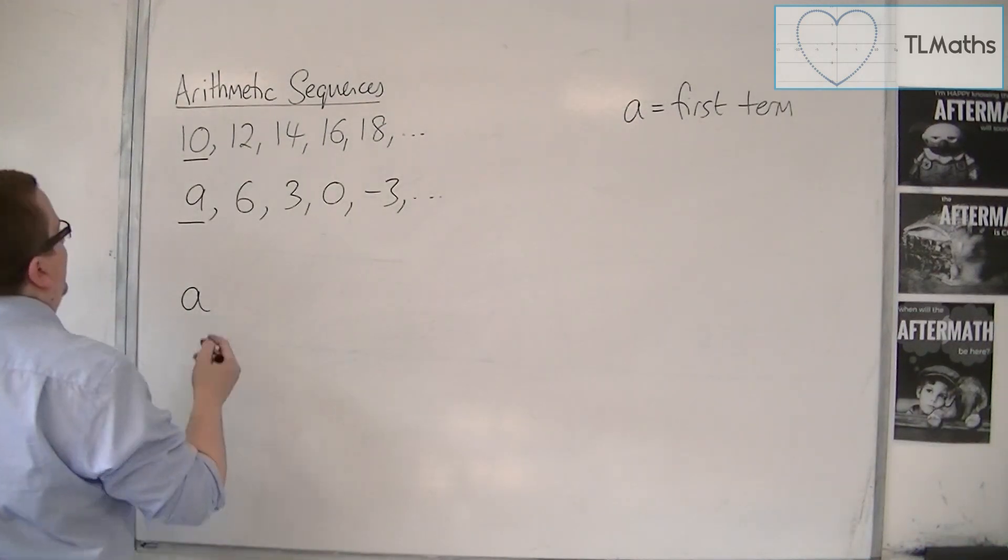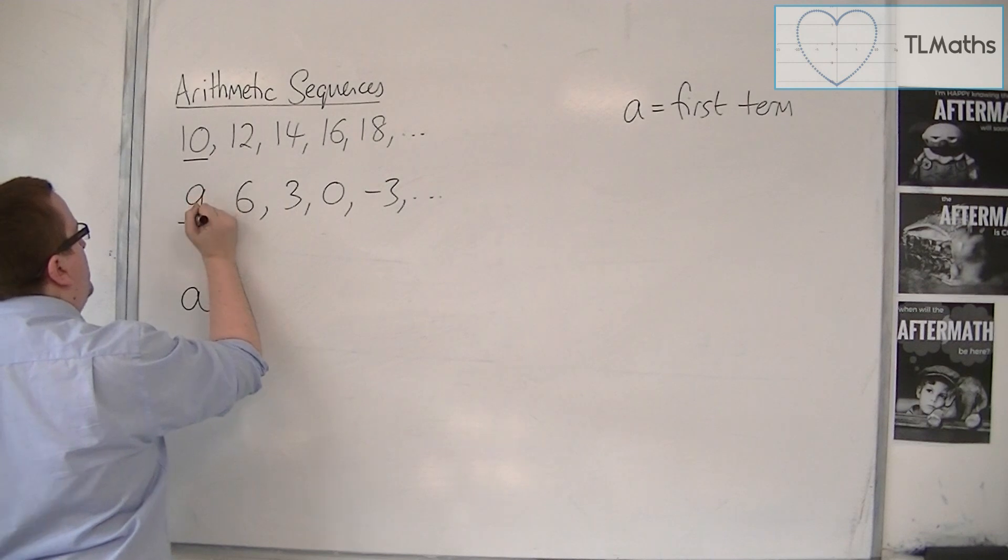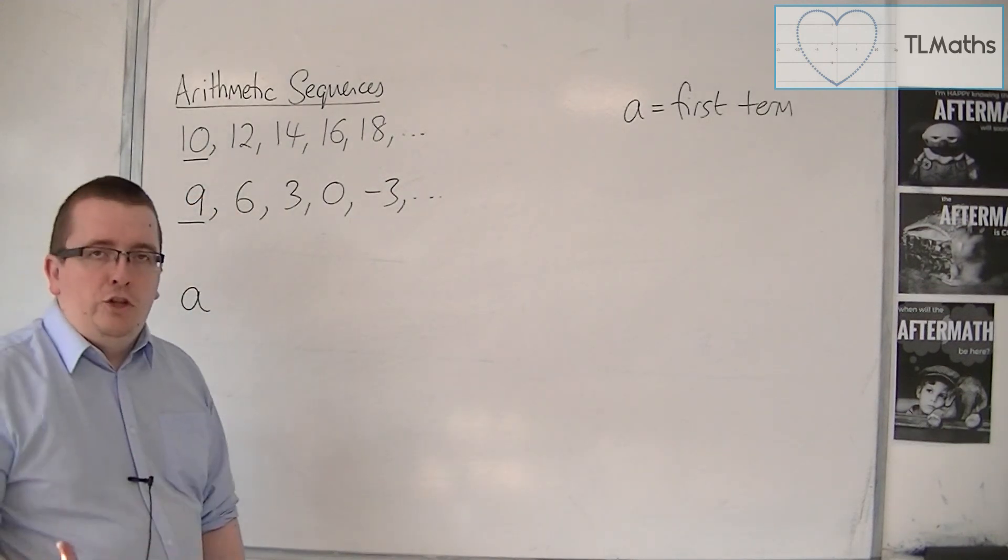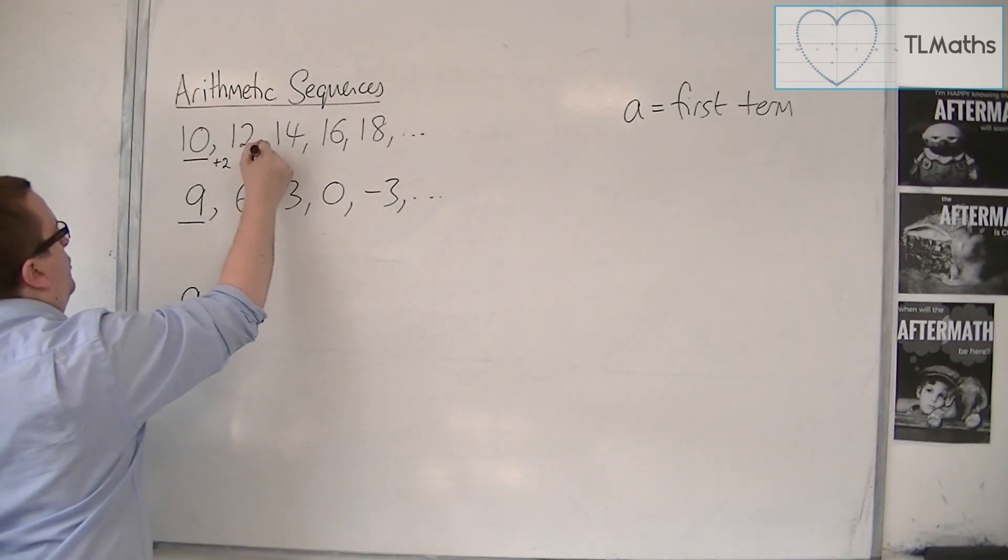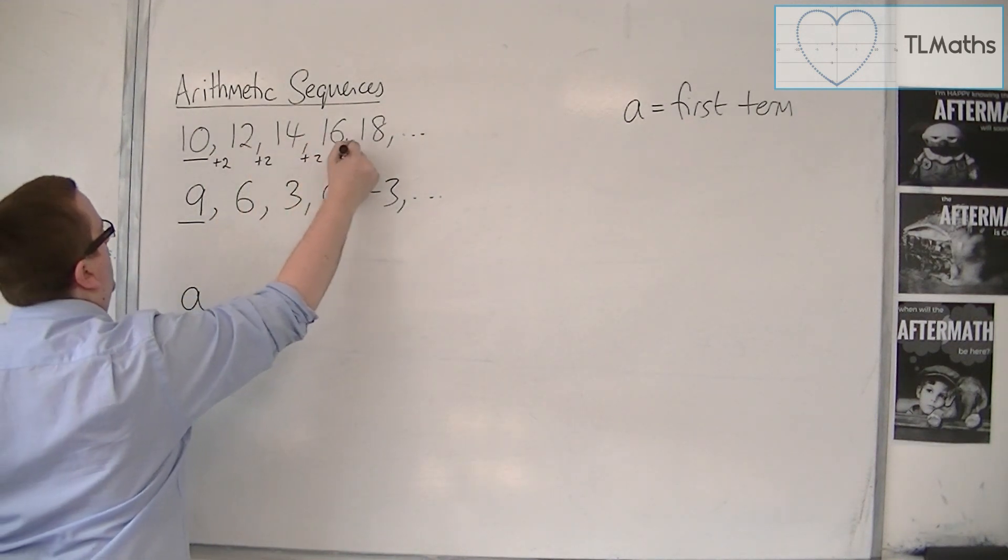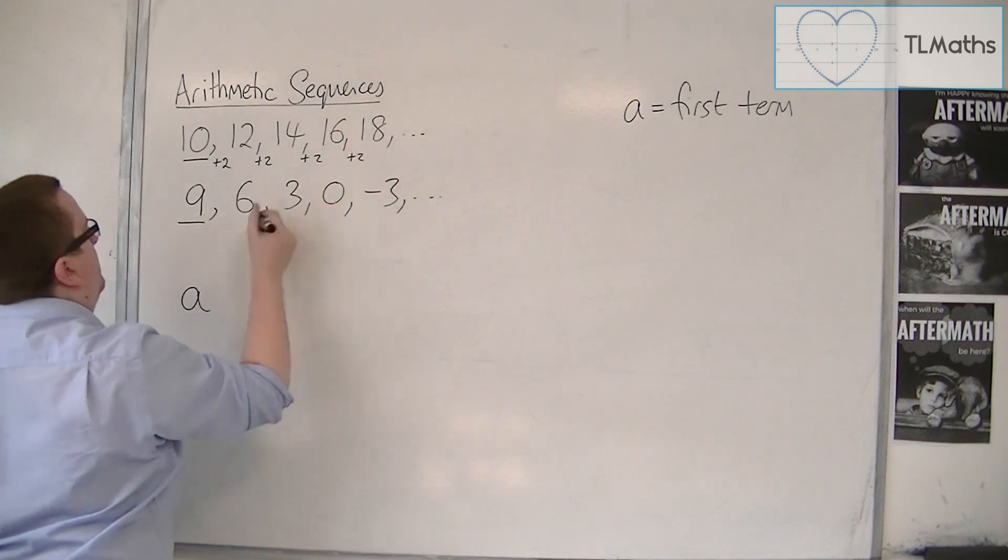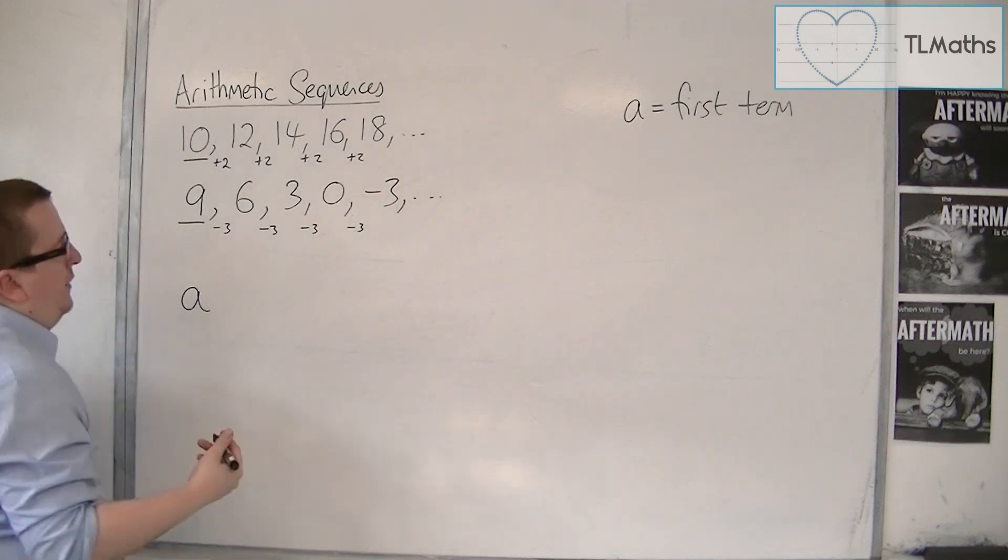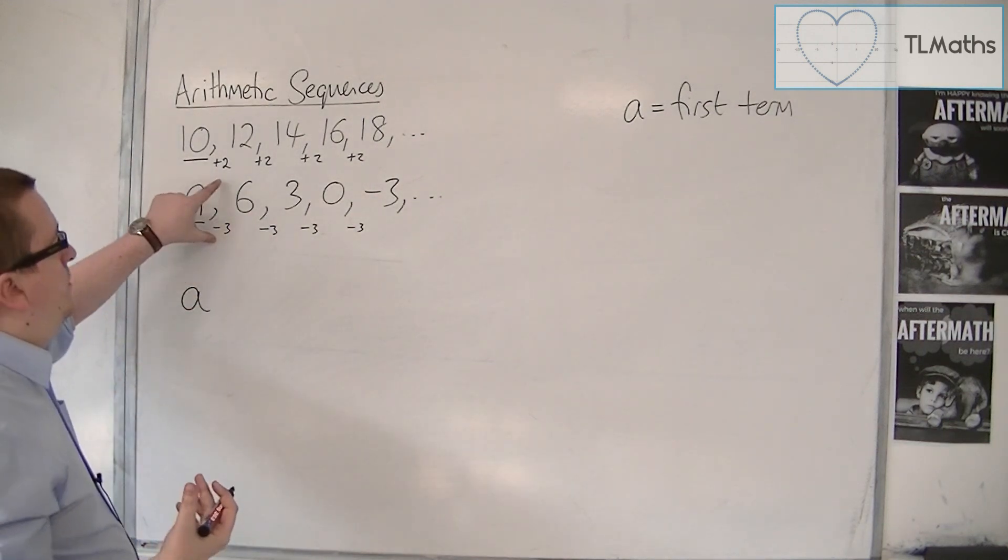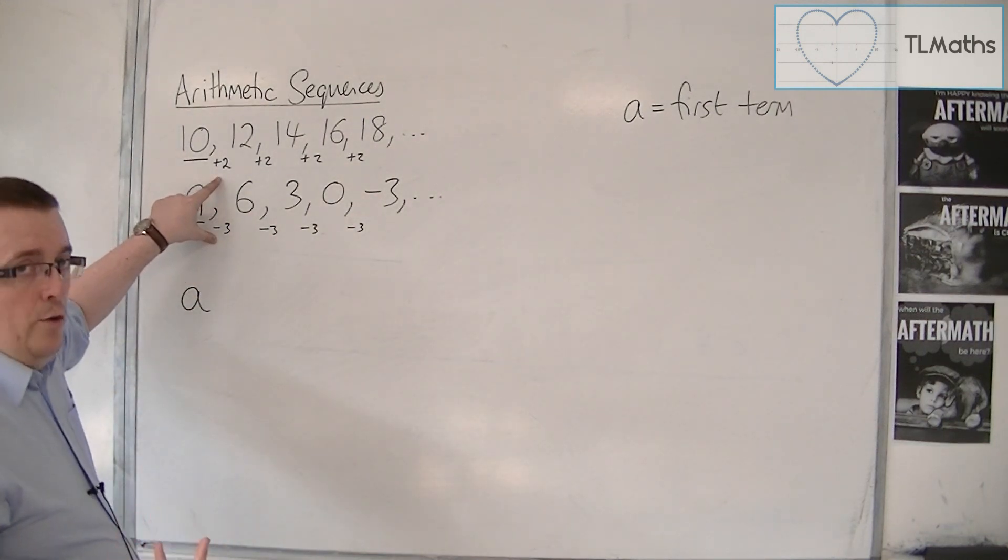Now what else do I need? Well, I need some kind of instruction about what I'm adding on each time. Because here I know that I'm adding on 2 each time, and here I know that I'm subtracting 3 each time. So once I know the first term and I know that value, then I'm ready to go.